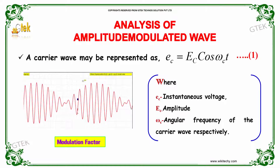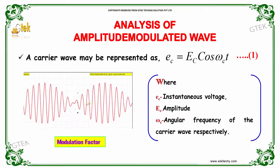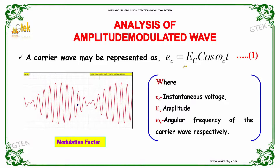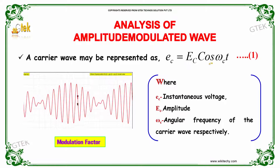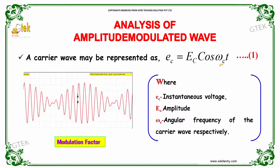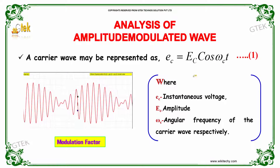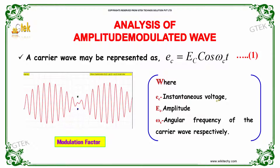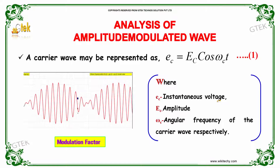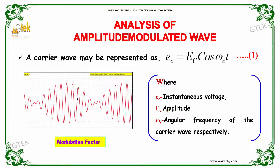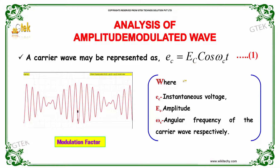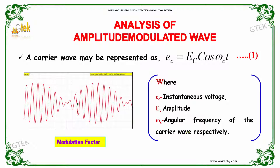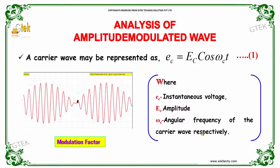A carrier wave may be represented as E_c = E_c · cos(ω_c · t), where E_c is the instantaneous voltage, E_c is the amplitude, and ω_c is the angular frequency of the carrier wave.